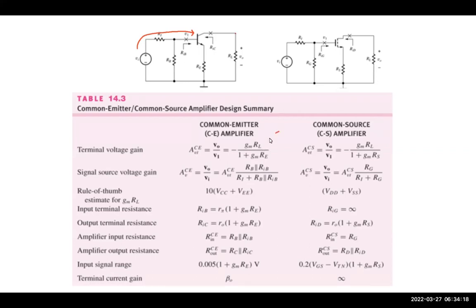The gain of this amplifier is gm·RL divided by one plus gm·RE, where RE comes from emitter degeneration. This is the gain from the base to the output. The entire gain v0 over v1 is this gain times another gain — a resistive divider from the input to the base.